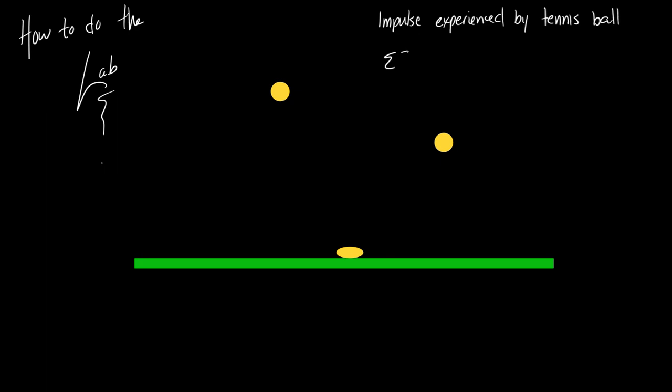There are two ways to find impulse. You should know which method to use because we talked about it already. We don't know anything about how long the ball was in contact with the ground, so that makes one method impossible. So we're looking at the other one: that's just going to be M times V-final minus M times V-initial, which may require you to look up the mass of a tennis ball before you turn this in.